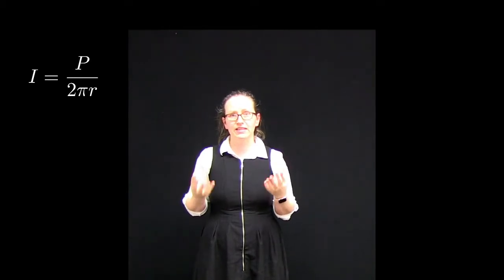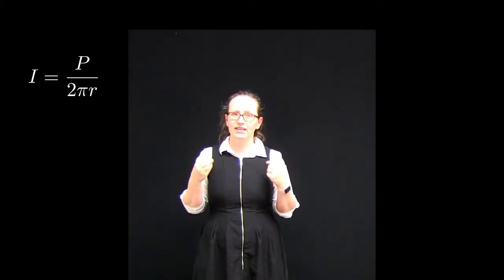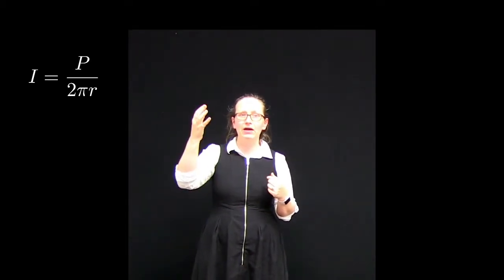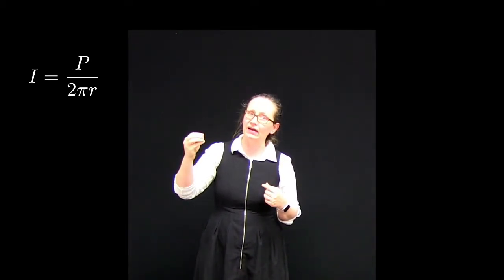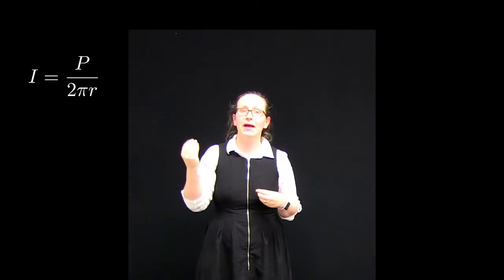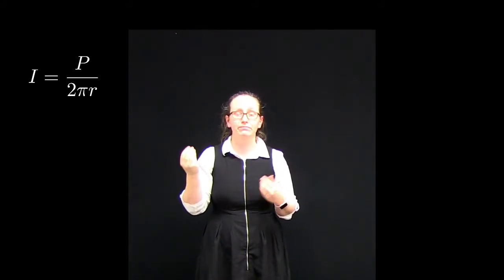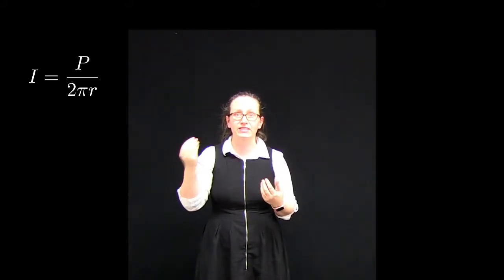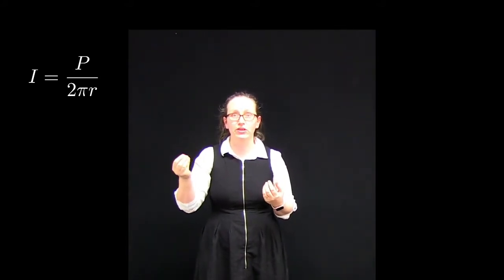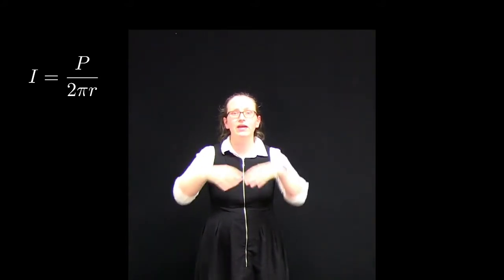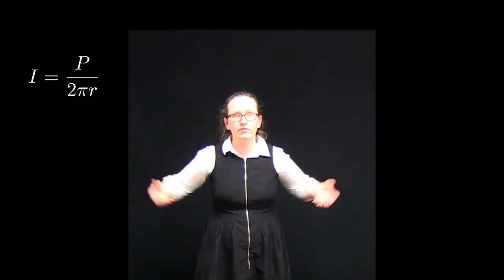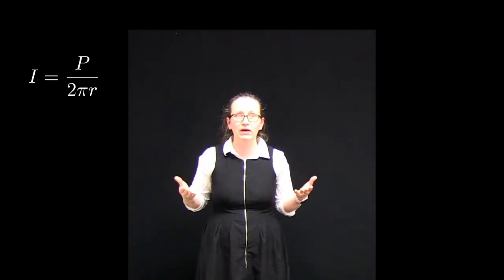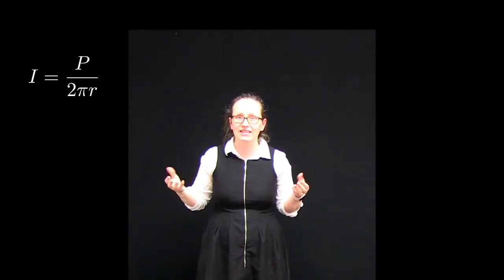So in this case the intensity is given by the power divided by 2πr. The 2πr comes about because that's the circumference of the circle, and that's the length over which this power is spreading itself.